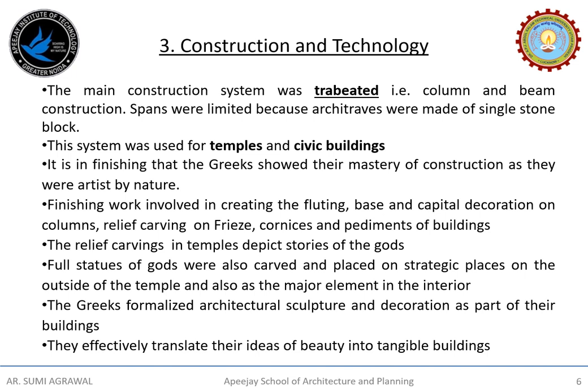The principal construction system used was trabeated, meaning the column and beam construction. The spans were limited because architraves were made of a single stone block. Construction technology involved ordering stones in a semi-prepared state from quarries, bringing them to site where they were roughly shaped and placed in position. The rough stones were then finished to achieve the final form and treatment of the building. It is in finishing that the Greeks showed their mastery of construction, as they were artistic by nature.